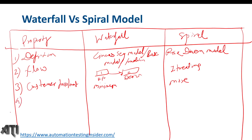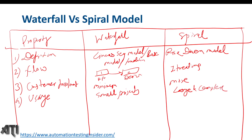The fourth property is usage. The waterfall model is suitable for small projects, while the spiral model is for large and complex or big-size projects. The fifth property is flexibility. The waterfall model is not flexible, whereas the spiral model is flexible because it works on the basis of iterations and we can change requirements at any time.